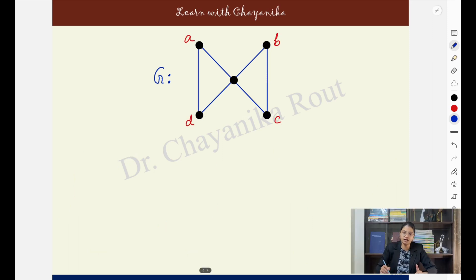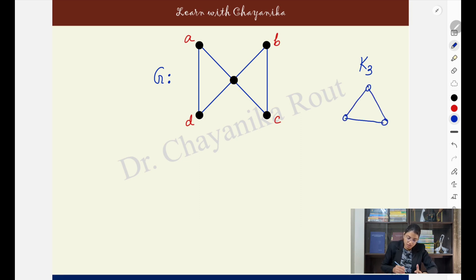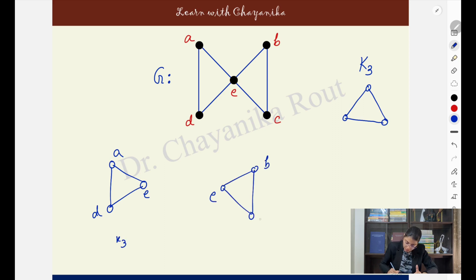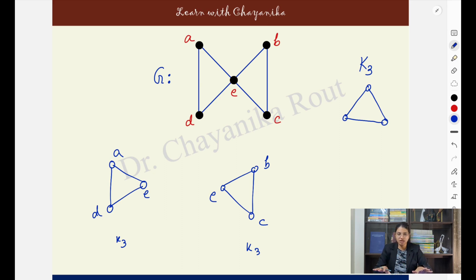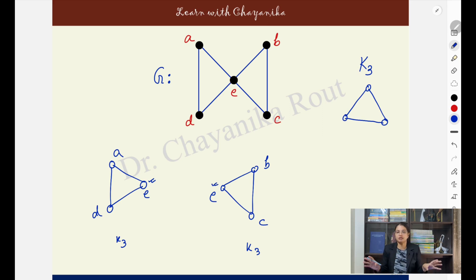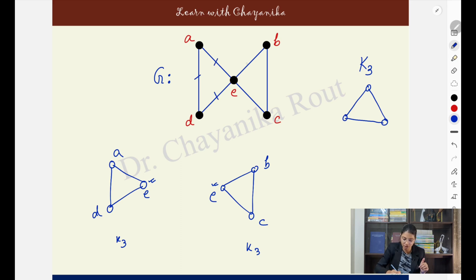Now suppose I want to decompose this graph into copies of K3 — the triangle, the complete graph on three vertices. I can take one triangle as one copy of K3, then take V, A, C as another copy of K3. So G is decomposed into two copies of K3 with every edge taken exactly once. Remember: while decomposing, multiple appearances of the same vertex are allowed, but edges must not appear in more than one copy.